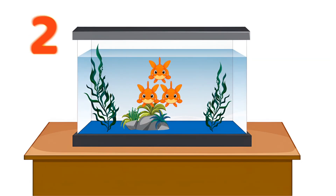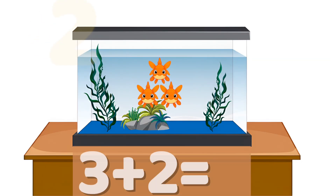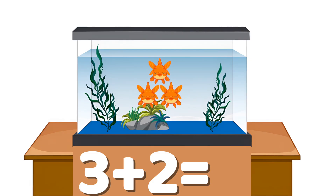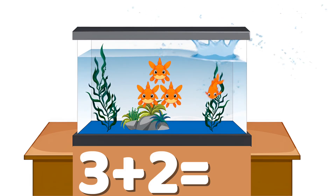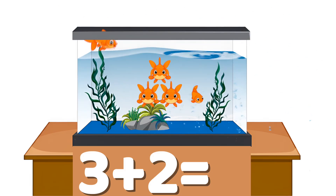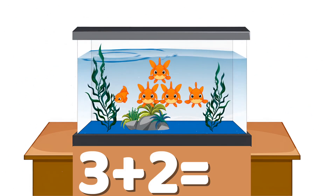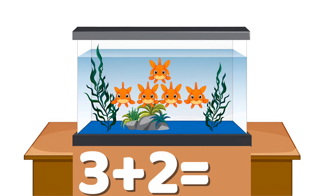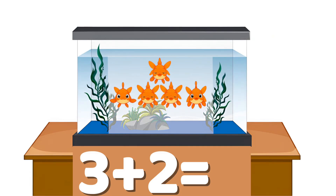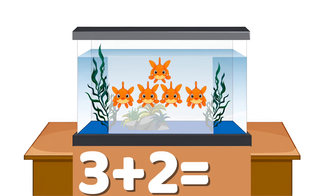Example number two: three plus two. Three fish are in the tank. Then two more fish swim in. Count with me: one, two, three, four, five. Three plus two equals five.